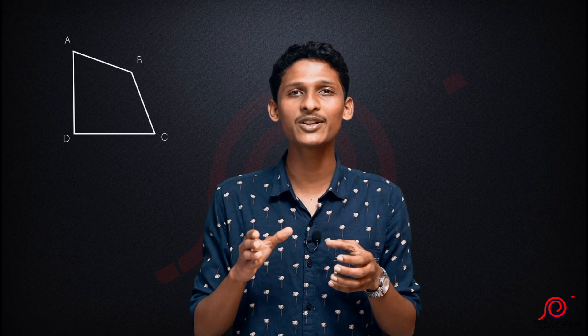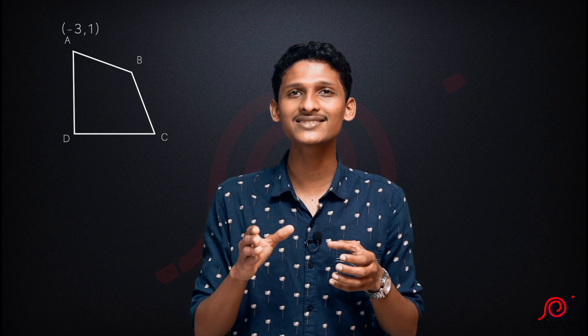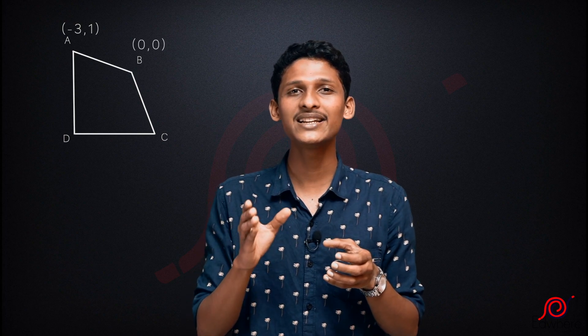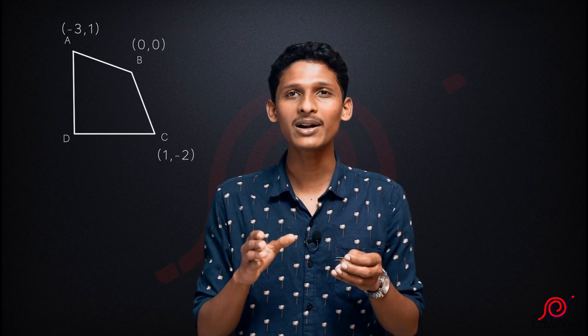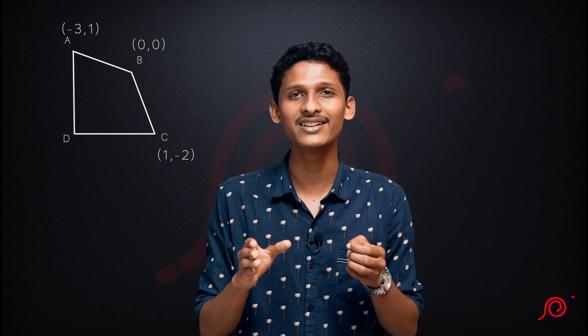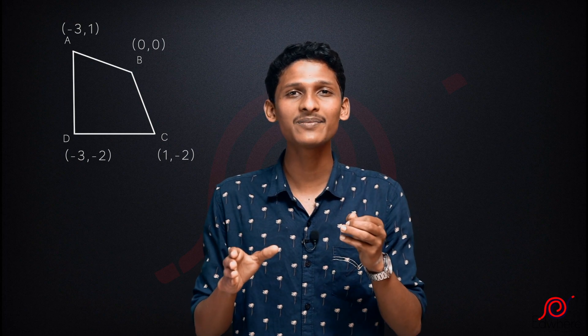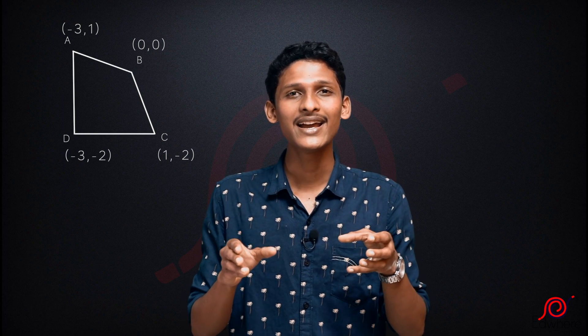In this video there is a problem. We have four points: A with coordinates (-3, 1), B with coordinates (0, 0), C with coordinates (1, -2), and D with coordinates (-3, -2). These four points are given. We need to find the coordinates — all sides and the diagonals.